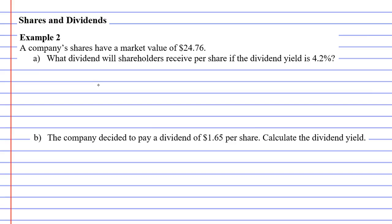Dividend yield and dividend are basically the same thing, the difference being that a dividend is a dollar amount and the dividend yield is a percentage. So if the market value is $24.76, then the dividend must be 4.2% of this amount.